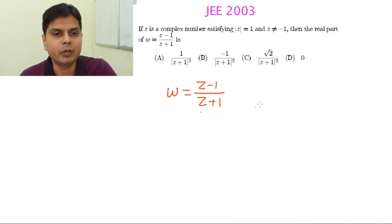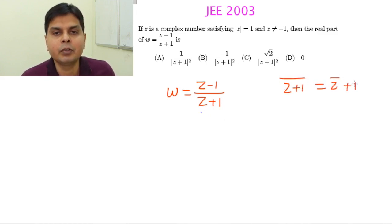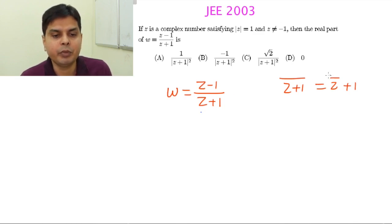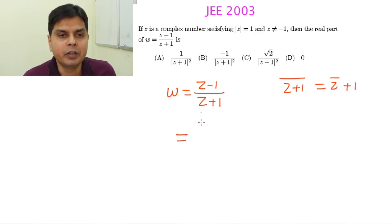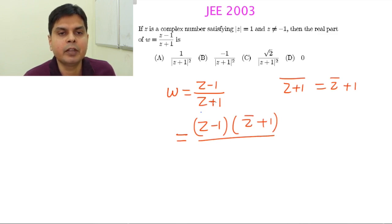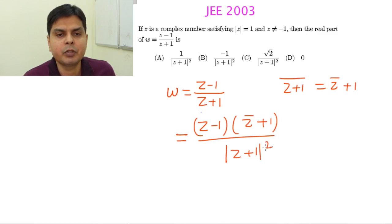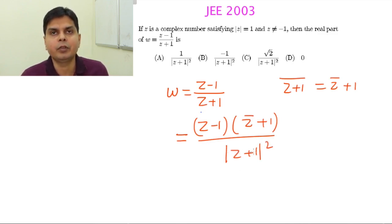What will be the conjugate? The conjugate of Z plus 1 will be Z conjugate plus 1, since the conjugate of 1 is 1. So we multiply both numerator and denominator by this conjugate. This gives (Z minus 1)(Z conjugate plus 1) divided by the modulus square of (Z plus 1), which is a real number since the modulus of any complex number is real.